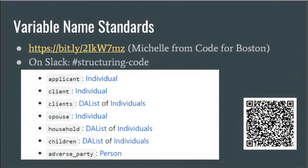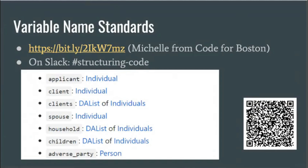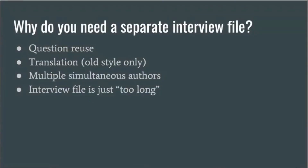If you're on the DocAssemble Slack, you can join the structuring-code channel — there's some history there and you can contribute your ideas. A question that comes up at the Boston workshop is: how do you know when to divide your interview file into multiple files? I went through a phase where the eviction defense project had 30 files, and at one point we had one. I've kind of come back to thinking the right answer is somewhere closer to one. Can anyone think about why you'd want a separate interview file?